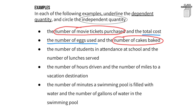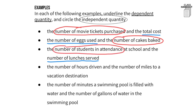The third example: the number of students in attendance at school and the number of lunches served. It makes more sense to say the number of lunches served will depend on the number of students in attendance, which means the number of lunches served is the dependent quantity and the number of students in attendance is the independent quantity.